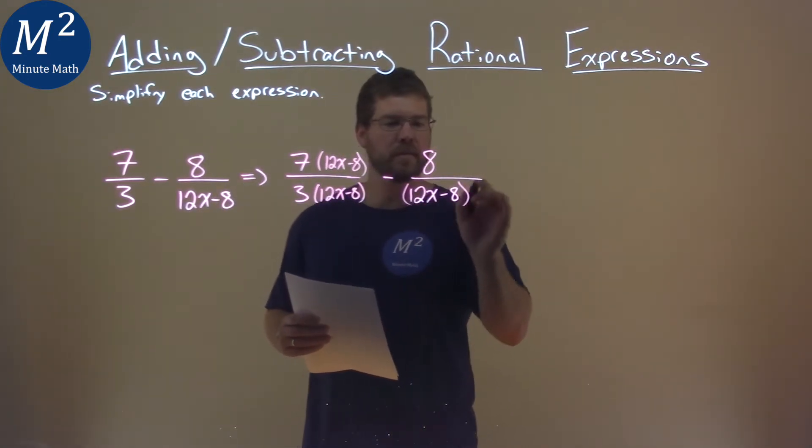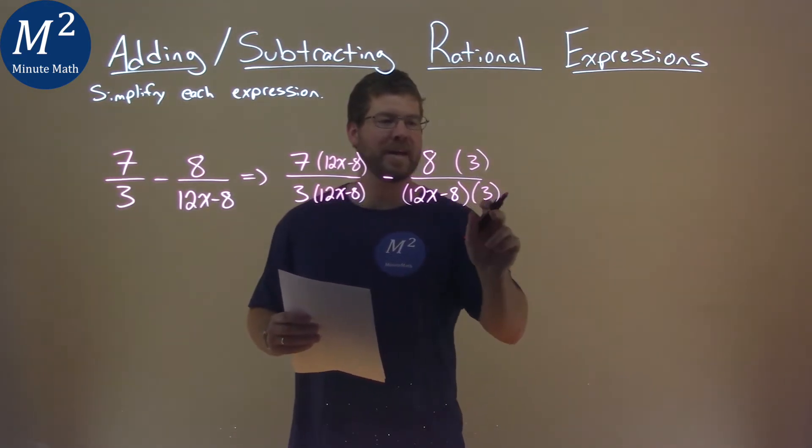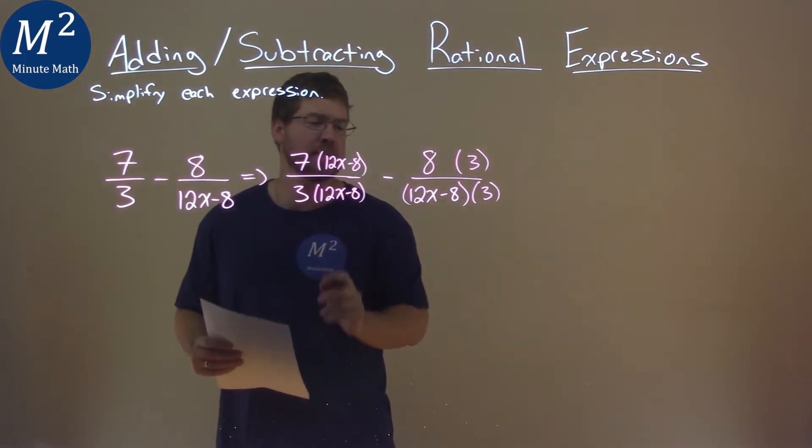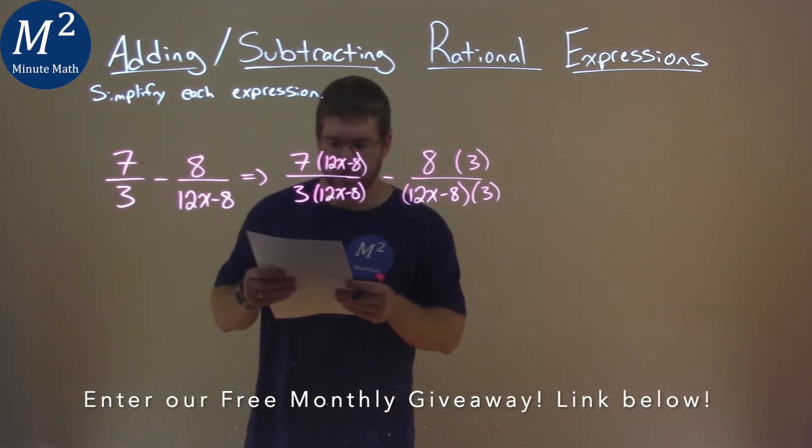I'm going to do the same thing here with this denominator being 3. Multiply both the top and bottom by 3/3. Now our denominator is 3 times (12x-8), meaning we can combine that to be one larger denominator.